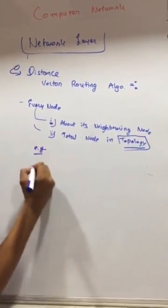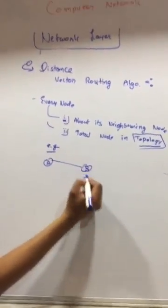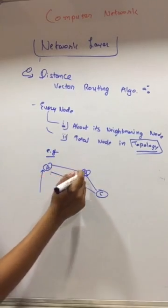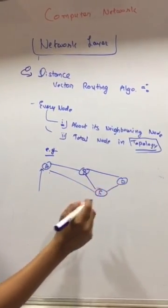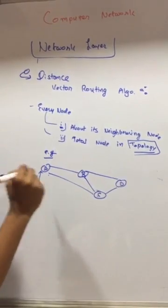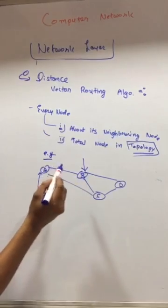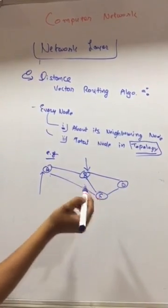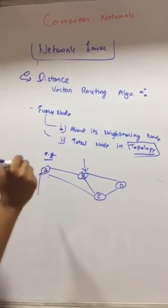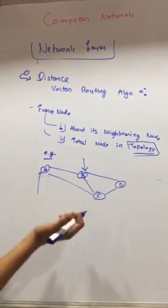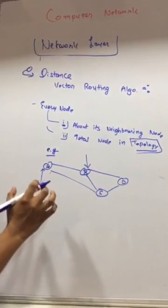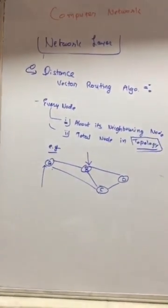If the distance vector routing algorithm is used, A knows about B and C but not about D directly. However, A knows there are four nodes in total including itself. Similarly, B knows about A, C, D, and B itself. D knows about C and knows there are four nodes including B. On the basis of that information, each node creates and shares a routing table, and after some time the full routing table is formed.